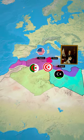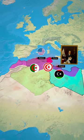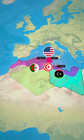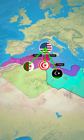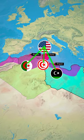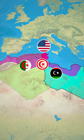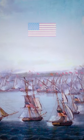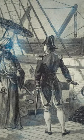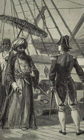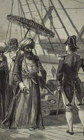Following the conclusion of the First Barbary War, the United States signed treaties with the remaining Barbary States, solidifying its commitment to free trade and maritime security. The Barbary Wars showcased the growing power and influence of the United States on the world stage, as it defended its interests and asserted its independence against the threats of piracy and extortion.